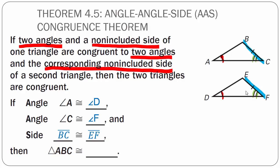Notice that BC and EF are in the same position, so they are corresponding sides. Triangle ABC is congruent to triangle DEF using the Angle-Angle-Side Congruence Theorem because I have an angle, an angle, and a side congruent to an angle, an angle, and a side that is not between the two angles.